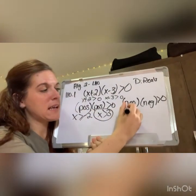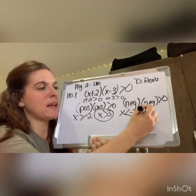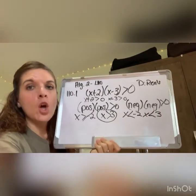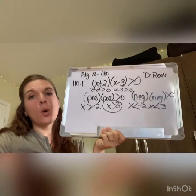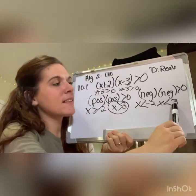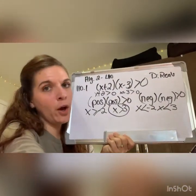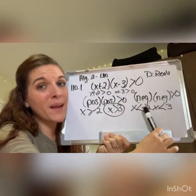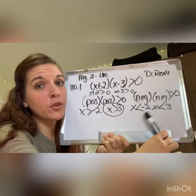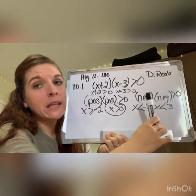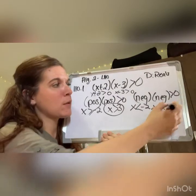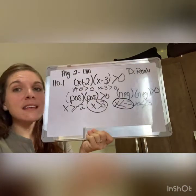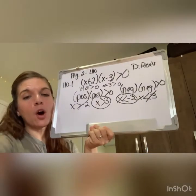Now flip both inequalities for the negative-negative case: x < -2 and x < 3. Which one satisfies both? Anything less than 3 is not necessarily less than -2 — for example, 2, 1, 0, -1 are all greater than -2. But anything less than -2 is also less than 3, like -3, -4, -5. So we keep x < -2.